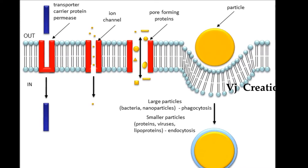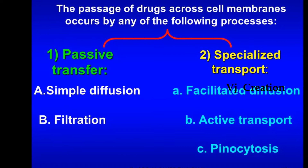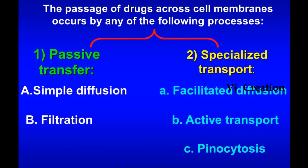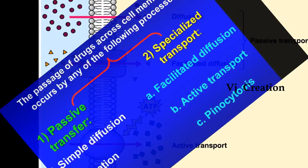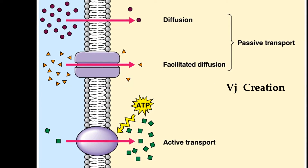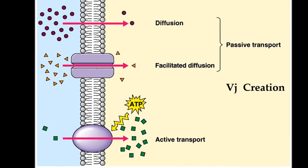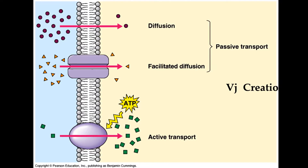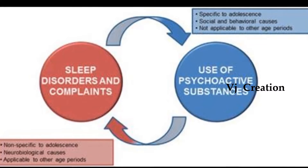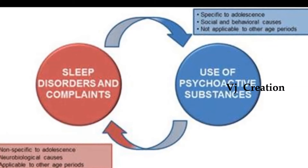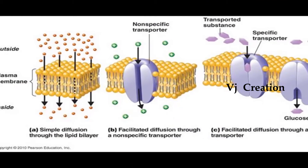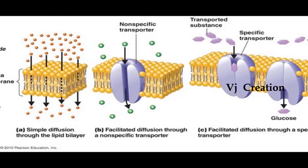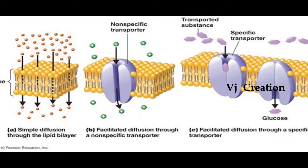Drugs can pass through cell membranes by two processes: passive transfer and specialized transport. Simple diffusion and filtration come under passive transfer. Simple diffusion is a bi-directional process, and both polar water-soluble and non-polar lipid-soluble substances can be transported by this process. Through filtration, only water-soluble substances can be transported, and it involves passage through pores present in the cell membrane.